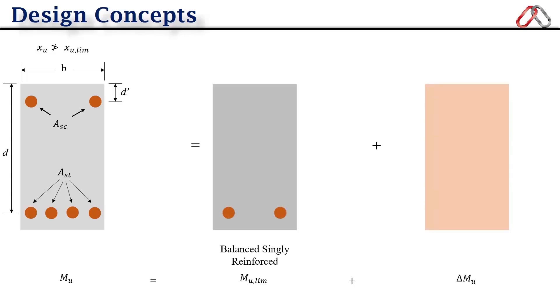Here M_u limiting is the limiting moment capacity of singly reinforced beam considering the limiting moment area of steel, that is A_st limiting. As you can see here, this section is without compression steel. Delta M_u is the additional moment which is resisted by additional compression steel A_sc and also corresponding additional tensile steel delta A_st. The important point here is that the contribution of concrete compression strength is only considered for this component M_u limiting. It does not contribute to delta M_u.